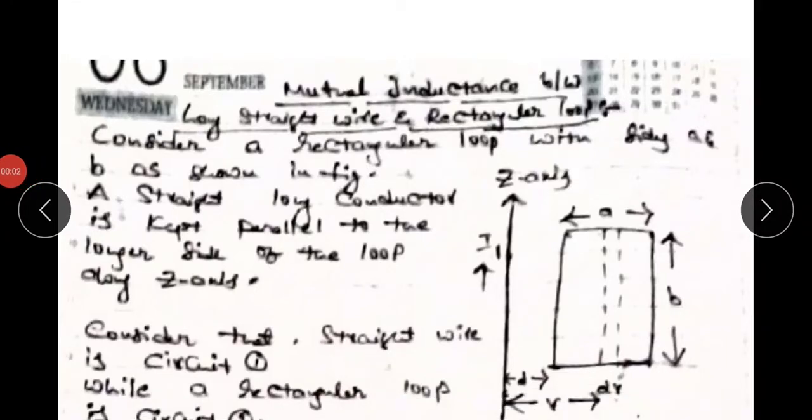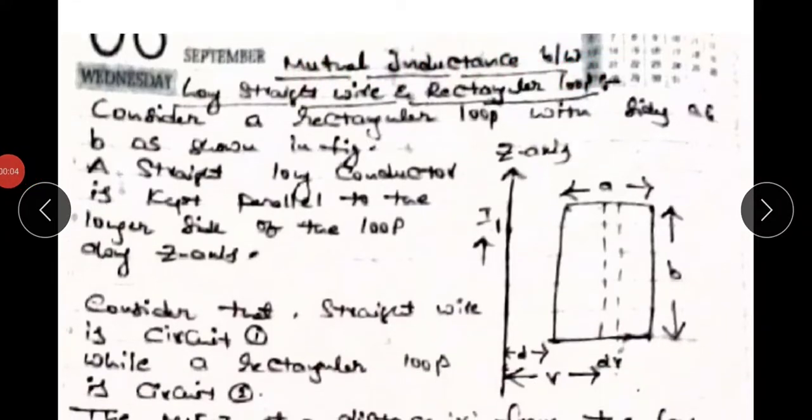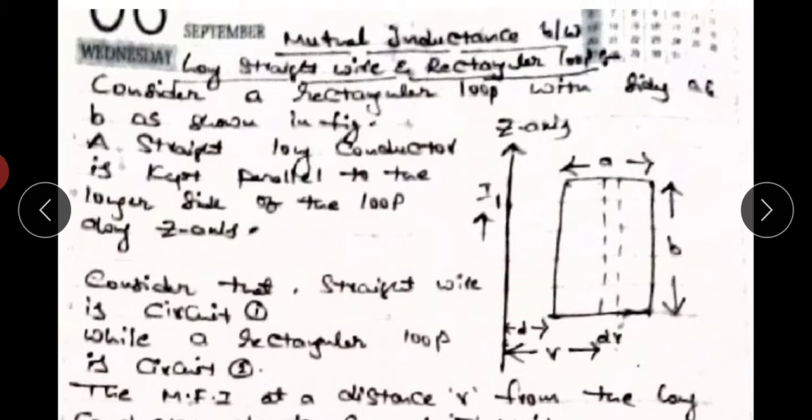I would like to explain about the mutual inductance between a long straight wire and a rectangular loop, and the coaxial cable self-inductance derivations. First, the mutual inductance between a long straight wire and a rectangular current loop.